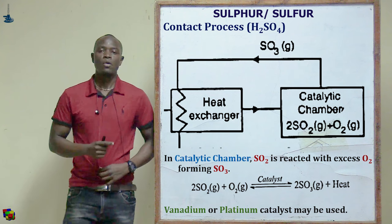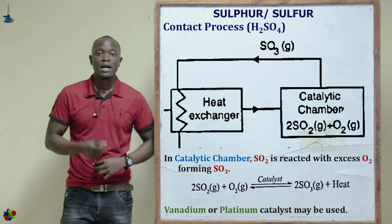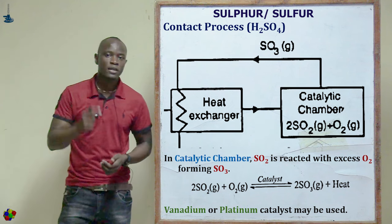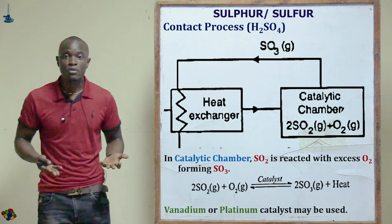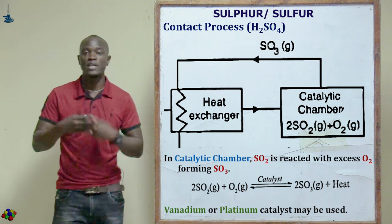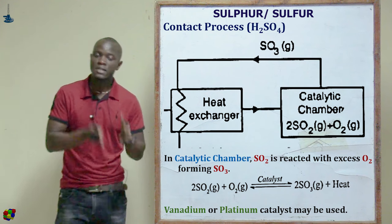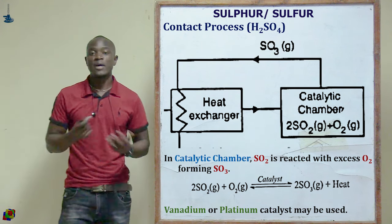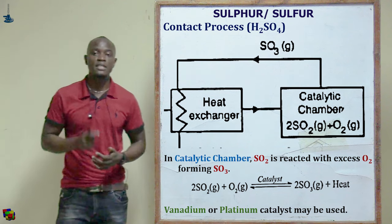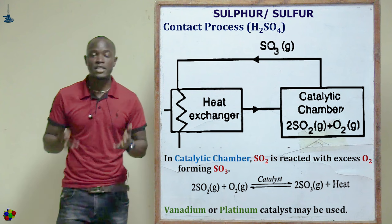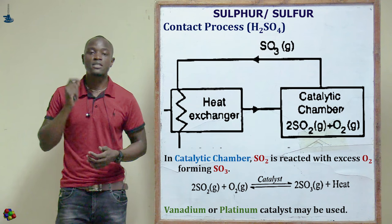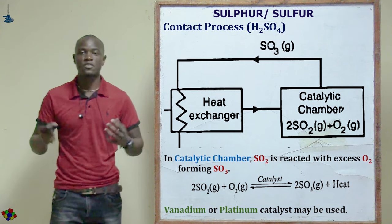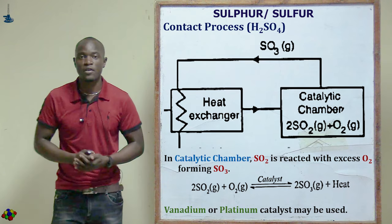To obtain a very high yield in the catalytic chamber, low temperatures and high pressure are used. However, very low temperatures make the reaction slow, while high temperatures encourage faster reaction of SO₂ with O₂ to form SO₃. Therefore, a temperature of 450°C and 3 atmospheres pressure are used — these are called the optimum conditions for obtaining the SO₃ yield.